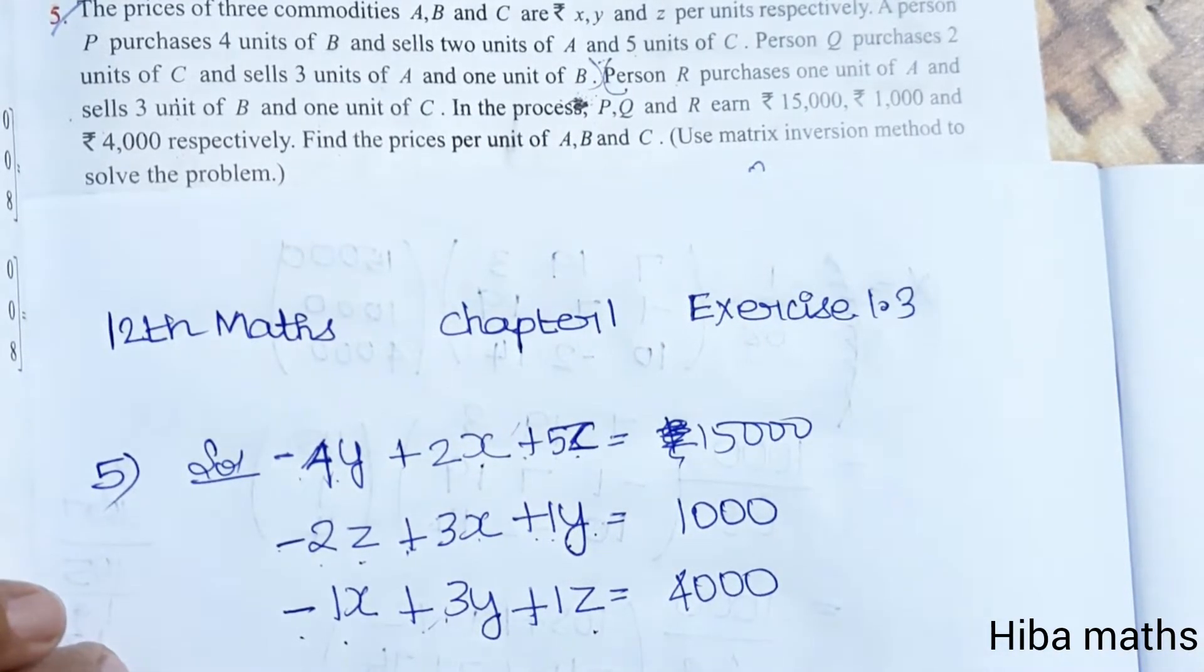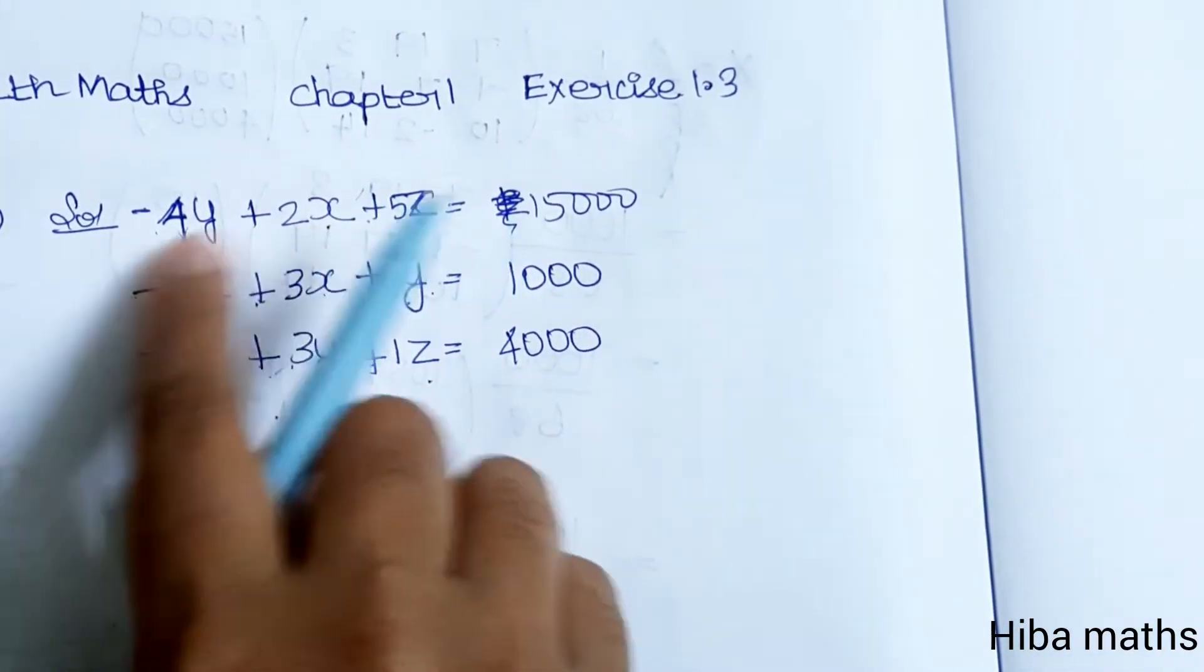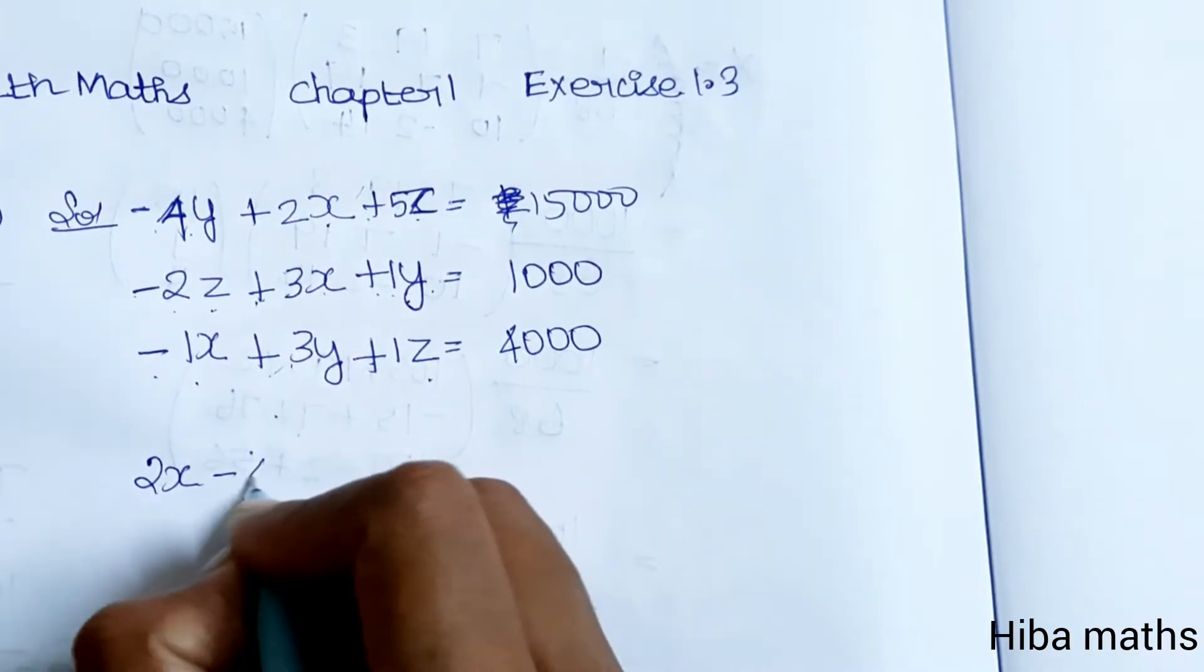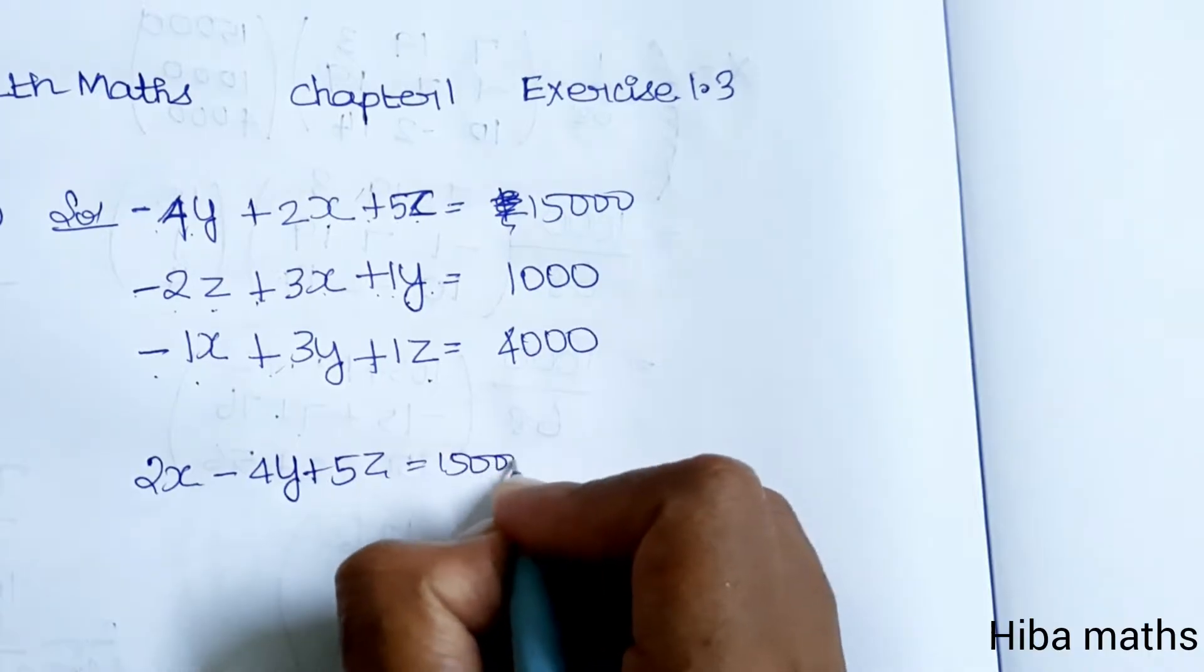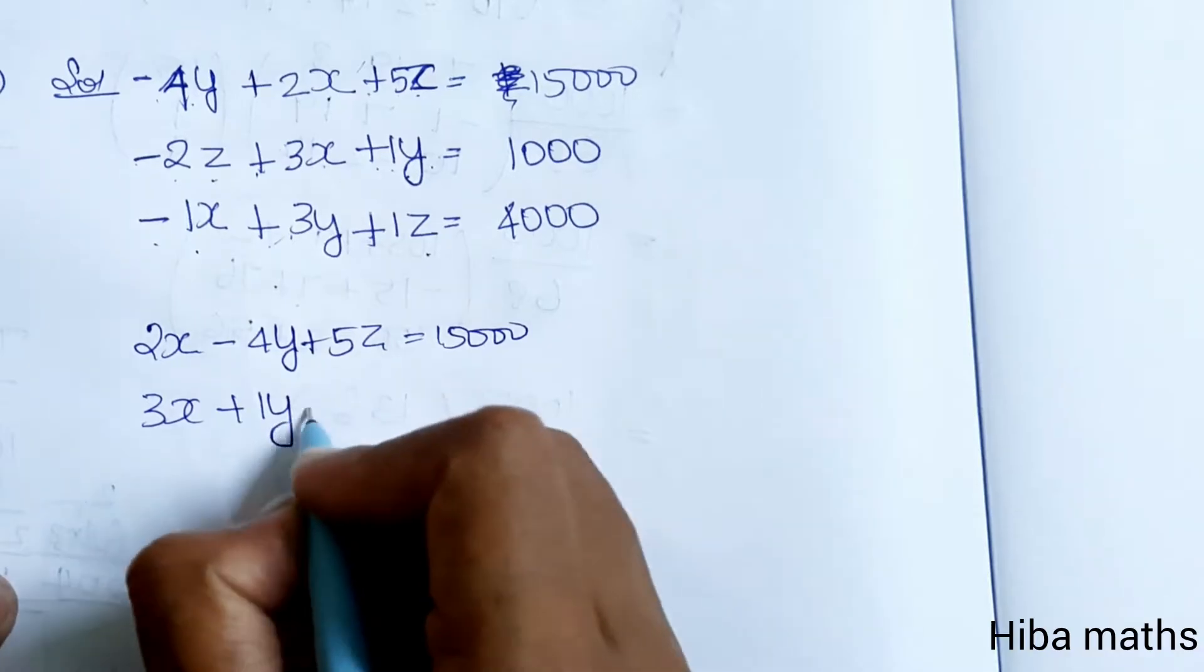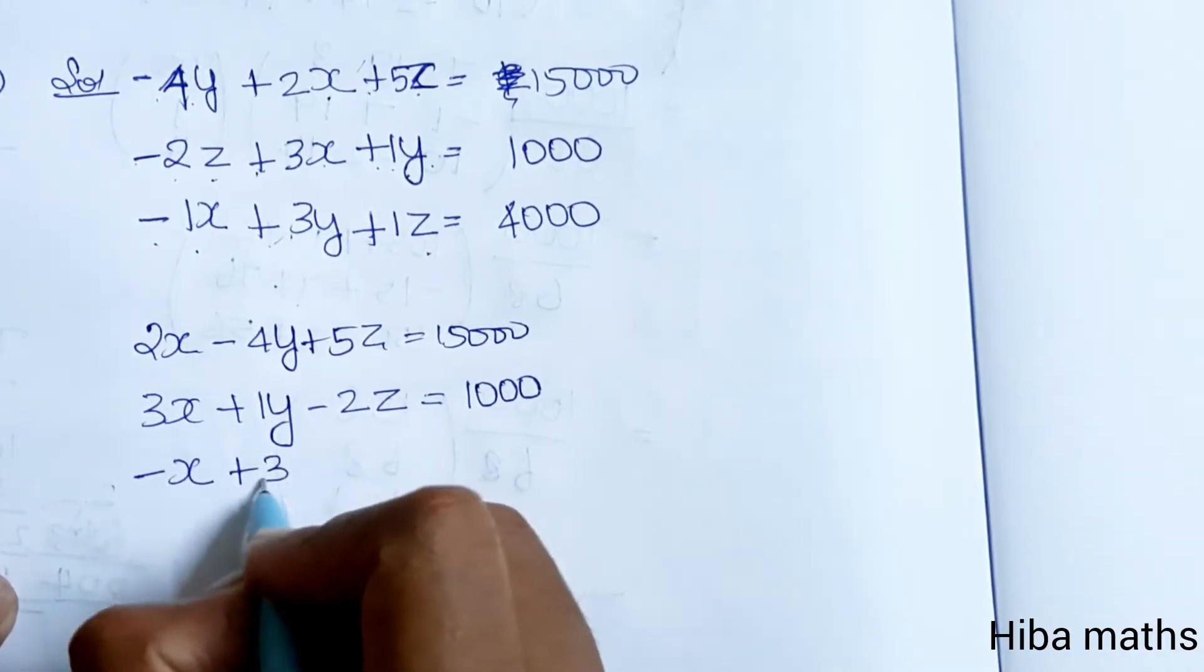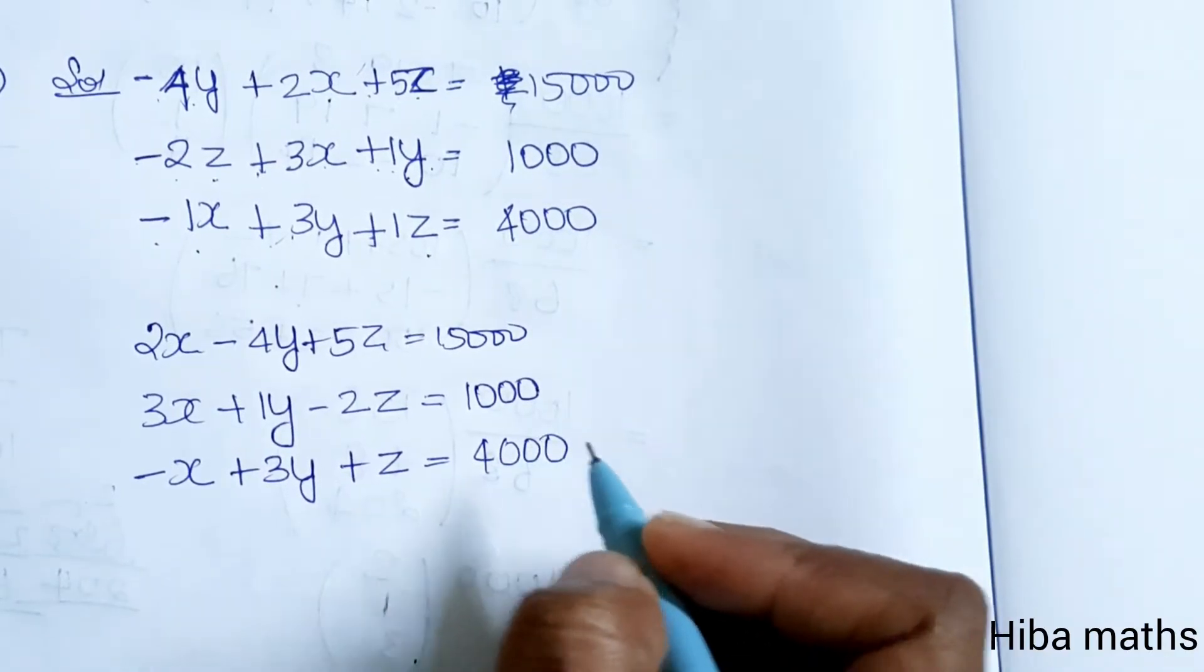We're going to solve in X, Y, Z format. 2X minus 4Y plus 5Z equals 15,000. 3X plus Y minus 2Z equals 1,000. Minus X plus 3Y plus Z equals 4,000.